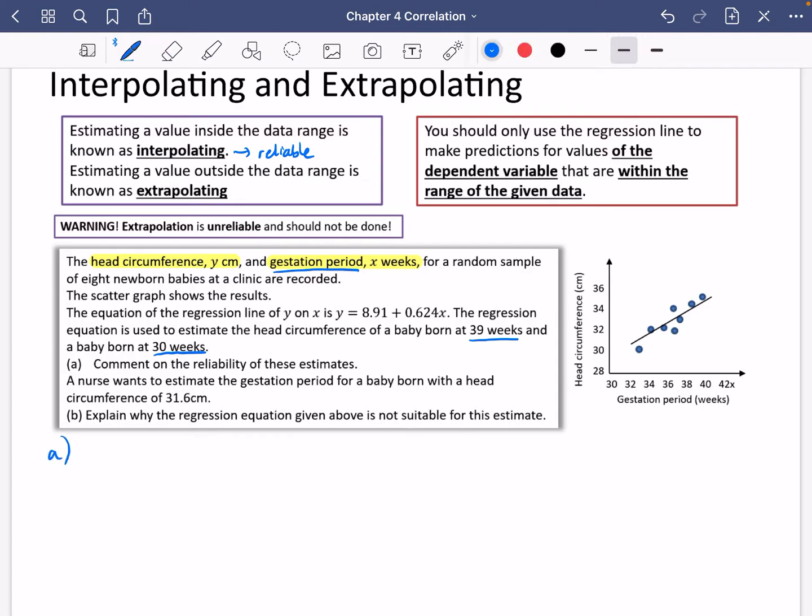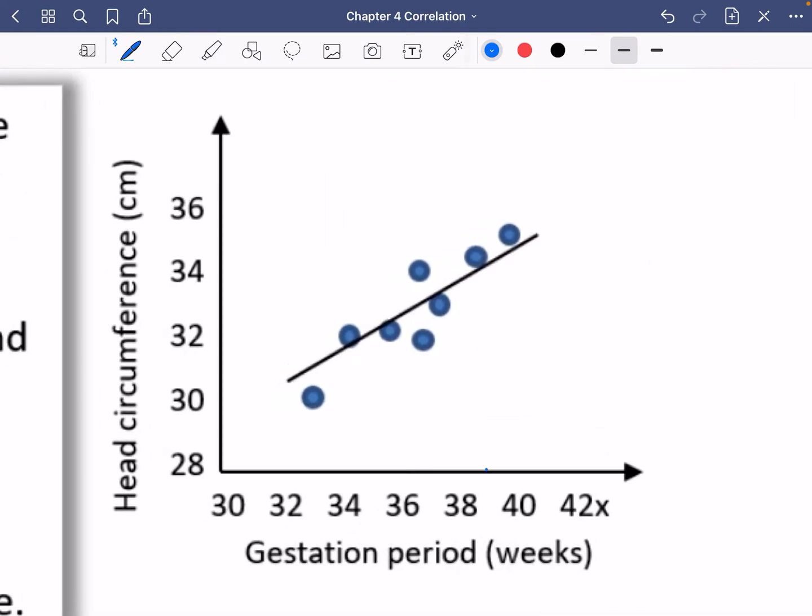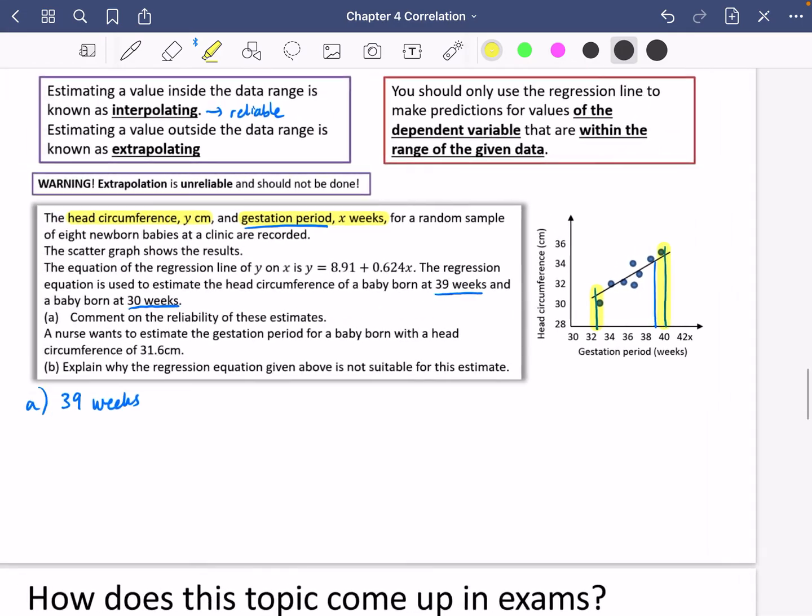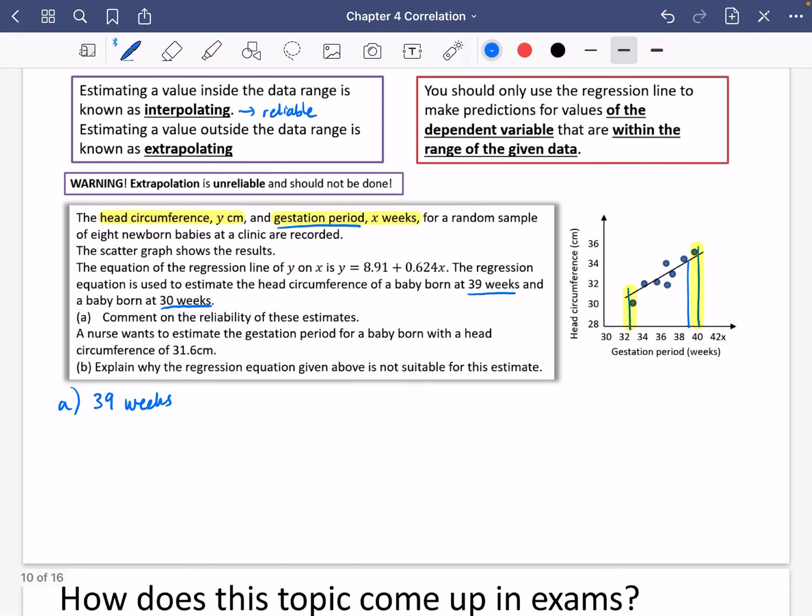So let's first of all talk about the one at 39 weeks. If I look at this one that I've got here, 39 weeks is over here. And that is inside the data range. This is the data range that I'm talking about that we've got here. It is from the smallest one up to the biggest one. So this is interpolation. It is inside the data range, and so it is reliable.